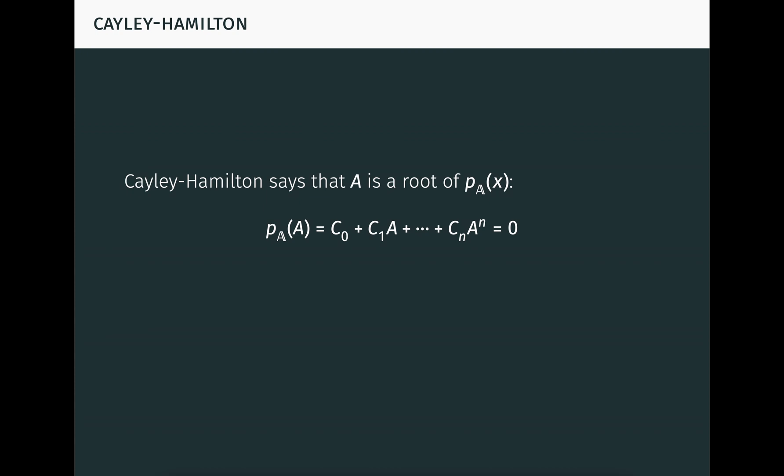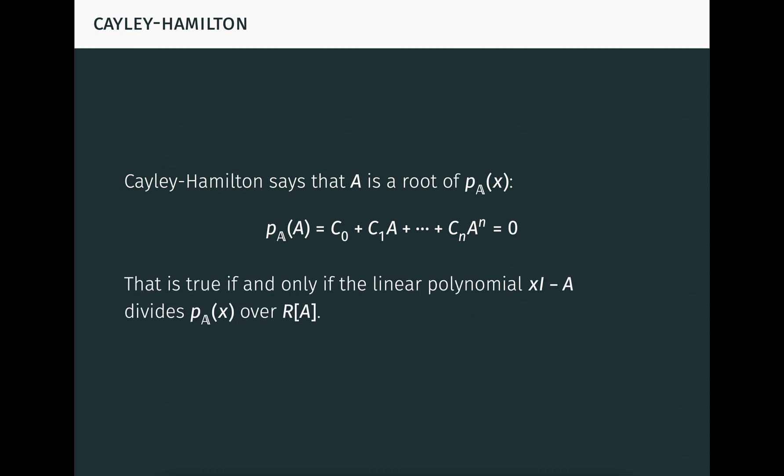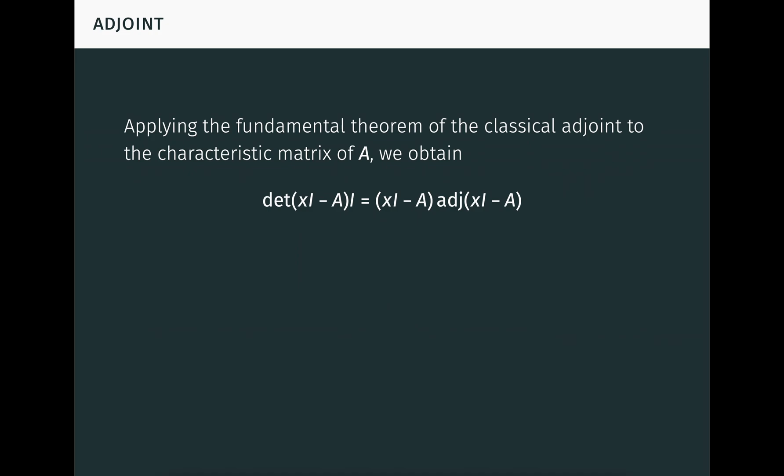This substitution of A works exactly like the substitution of zero over the ring R seen earlier, but here everything is happening over the ring R[A]. From familiar facts about roots of polynomials, we know that this equation is true if and only if the linear polynomial XI minus A, that is, the characteristic matrix of A, divides the characteristic polynomial of bold A over the ring R[A]. And we already know something very close to that. By applying the fundamental theorem of the classical adjoint to the characteristic matrix of A, we obtain this equation.